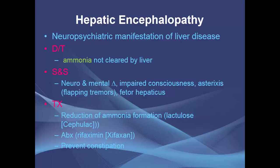In hepatic encephalopathy, ammonia is not cleared by the liver — where it is normally broken down into urea and excreted by the kidneys. Patients will have neurologic and mental changes, impaired consciousness, asterixis, and fetor hepaticus — an odor on the breath indicating high ammonia levels. Treatment is to reduce ammonia levels. Lactulose is the main medication given; it is also a laxative that helps with constipation. Antibiotics may also be needed, with rifaximin being the drug of choice.